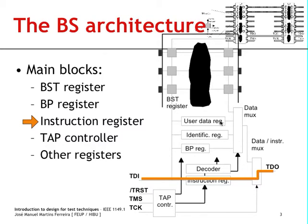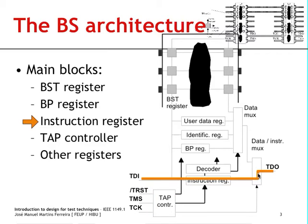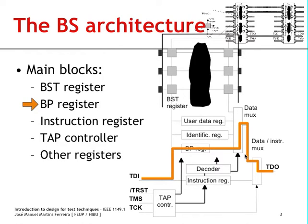Now we know how to control the data multiplexer, but how can we control the data or instruction multiplexer? The answer lies in the so-called test access port controller, which is a small finite state machine controlled by the external input called test mode select. By driving an appropriate sequence of ones and zeros at TMS, we can take this finite state machine to a state which drives the data or instruction multiplexer to the appropriate operating mode — whether to shift in an instruction or to shift in data. It is the instruction register that controls the data multiplexer.